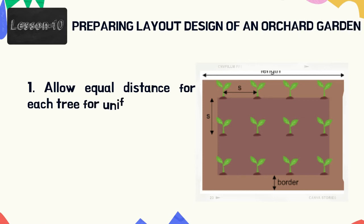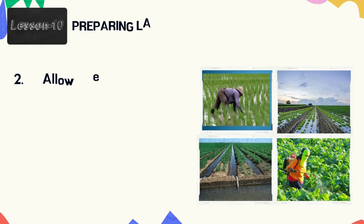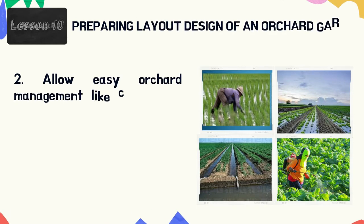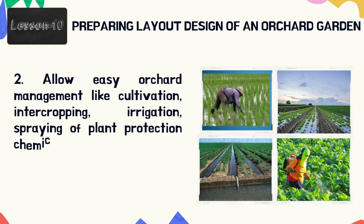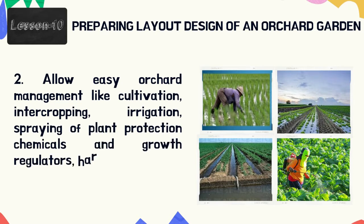Number one: allow equal distance for each tree for uniform growth. Number two: allow easy orchard management like cultivation, intercropping, irrigation, spraying of plant protection chemicals and growth regulators, harvesting, etc.